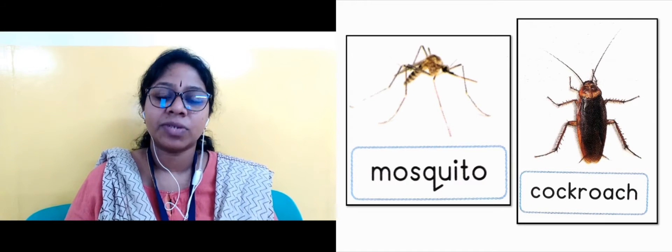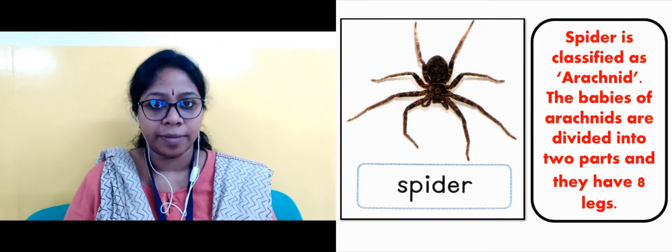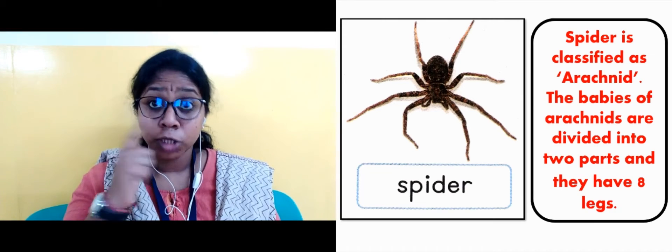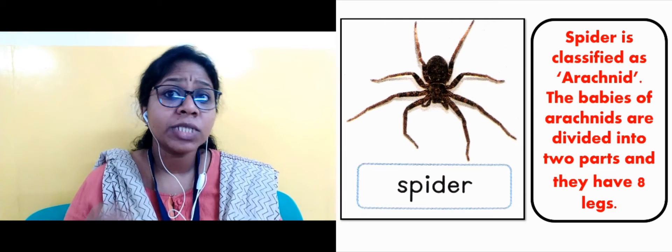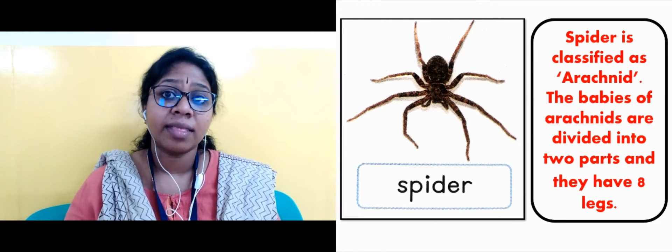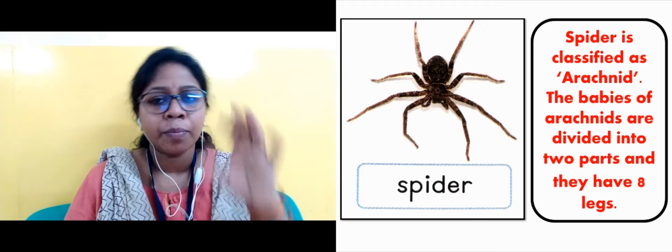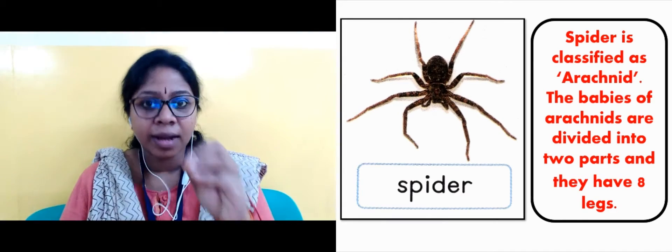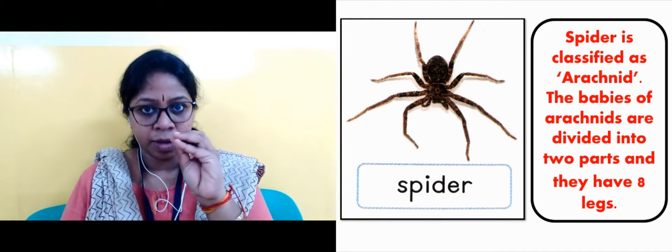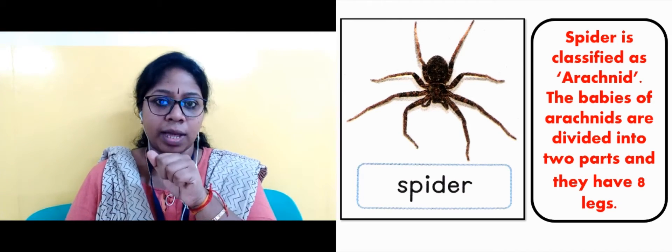The next slide has the word arachnid. In the next slide I'll explain — it's a picture of a spider. Spider is classified as an arachnid. The babies of arachnids are divided into two parts and they have eight legs. Spider belongs to the arachnid group, and their young ones have eight legs.